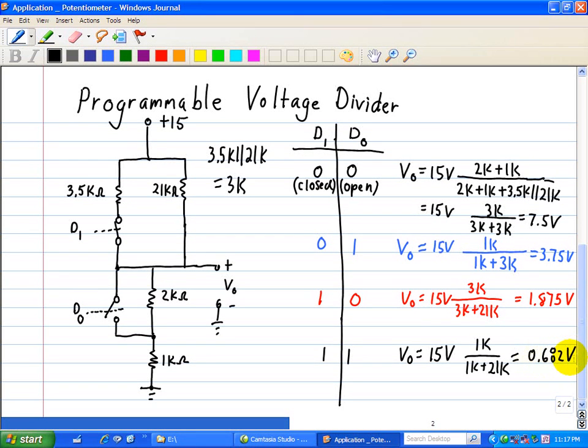And so that's how a programmable voltage divider works, in which we have digital signals controlling this analog resistor network.